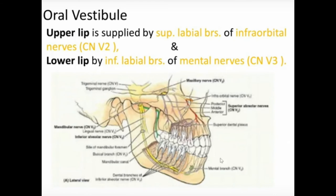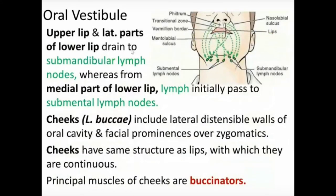The upper lip and lateral parts of the lower lip drain their lymphatics to the submandibular lymph nodes, which lie at the angle of the mandible. The medial part of the lower lip drains to the submental lymph nodes in the submental triangle. These superficial lymph nodes ultimately drain into the deep cervical lymph nodes along the internal jugular vein.